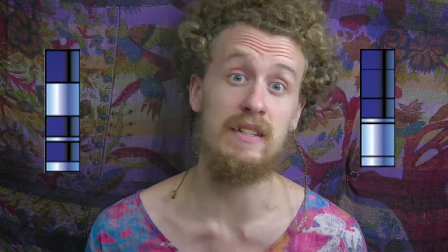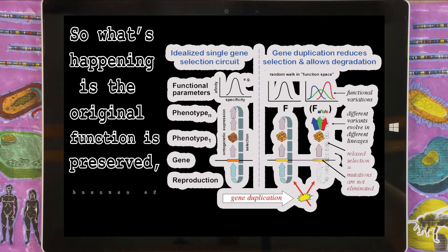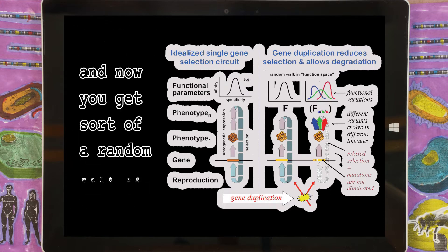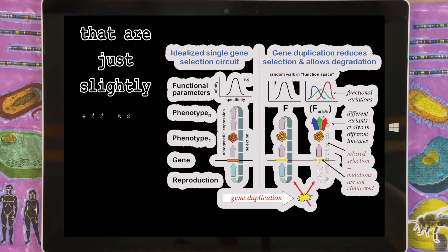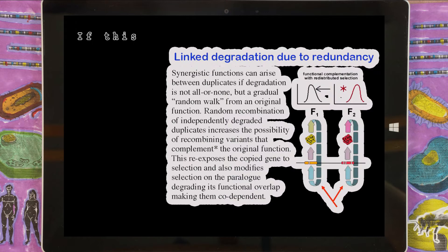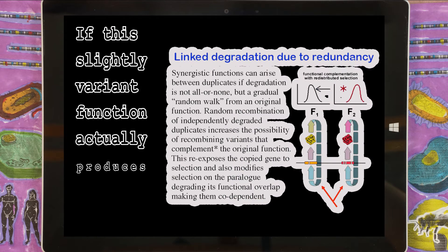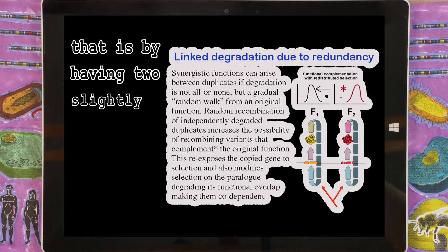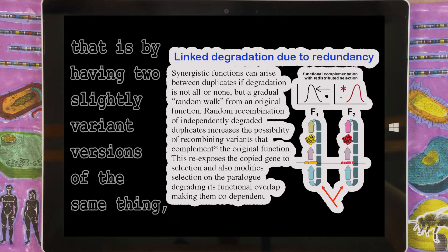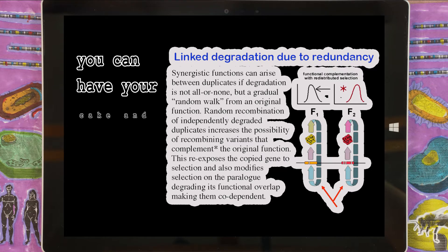This redundant duplication has a particular effect on how natural selection impacts the gene. Most of the time, selection acts as a conservative force — any deviations in the protein that causes a function will usually make the function worse. But now that there are two copies of the gene, one copy can remain the same, while the other is free to wander around and explore possibilities without so much risk. The original function is preserved because of the redundancy, and you get a random walk of alternatives slightly variant from the original function. If this slightly variant function produces something useful, you can do more than one thing — you can have your cake and eat it too.